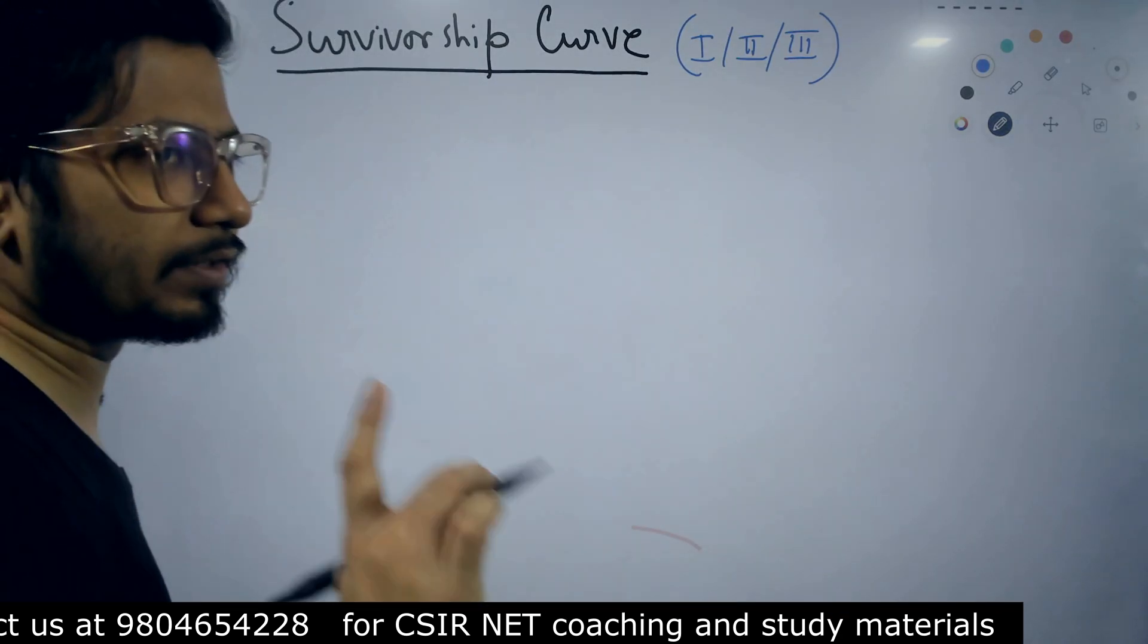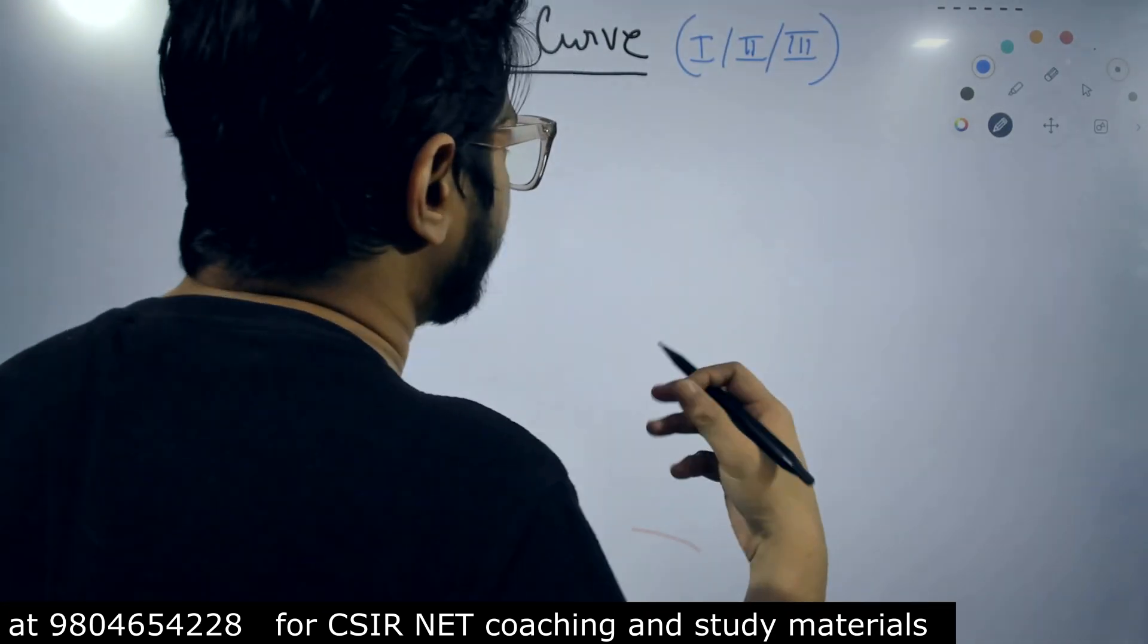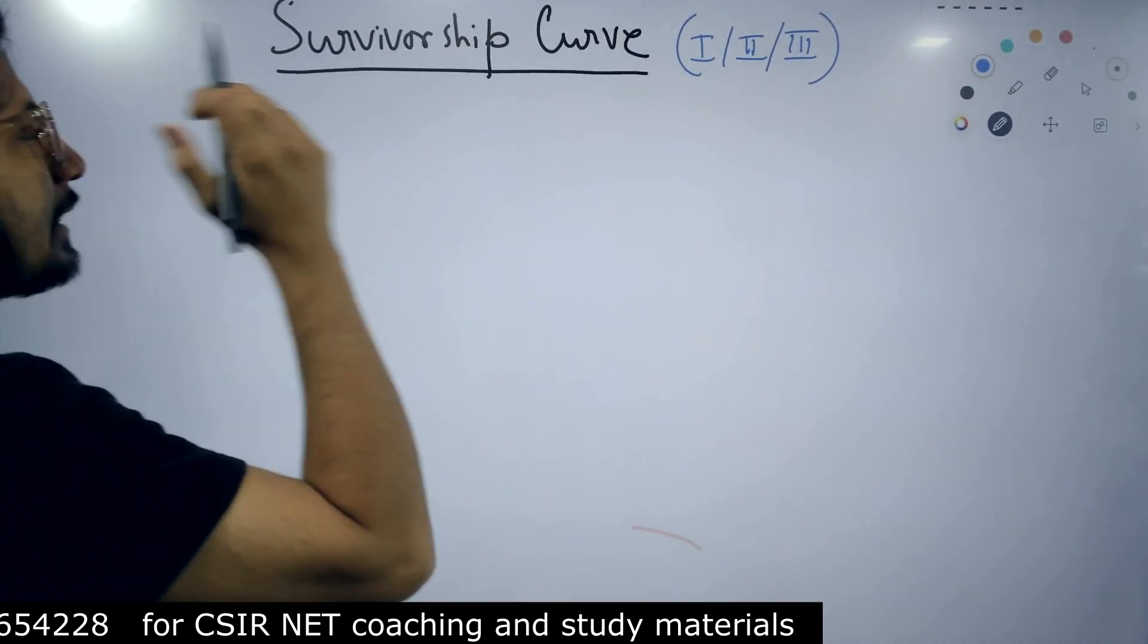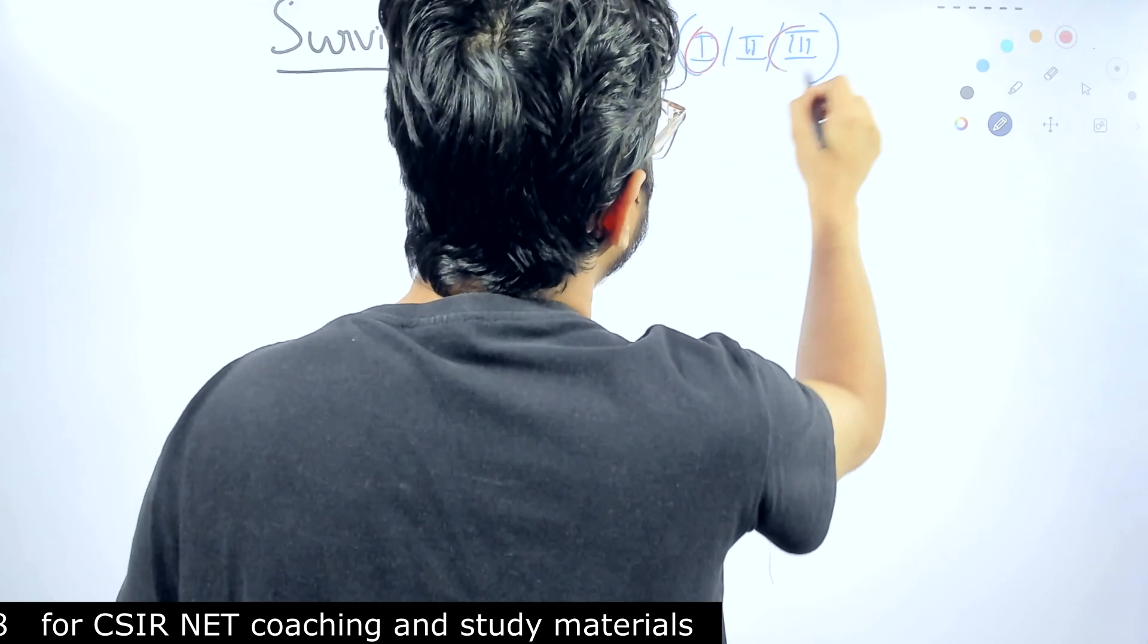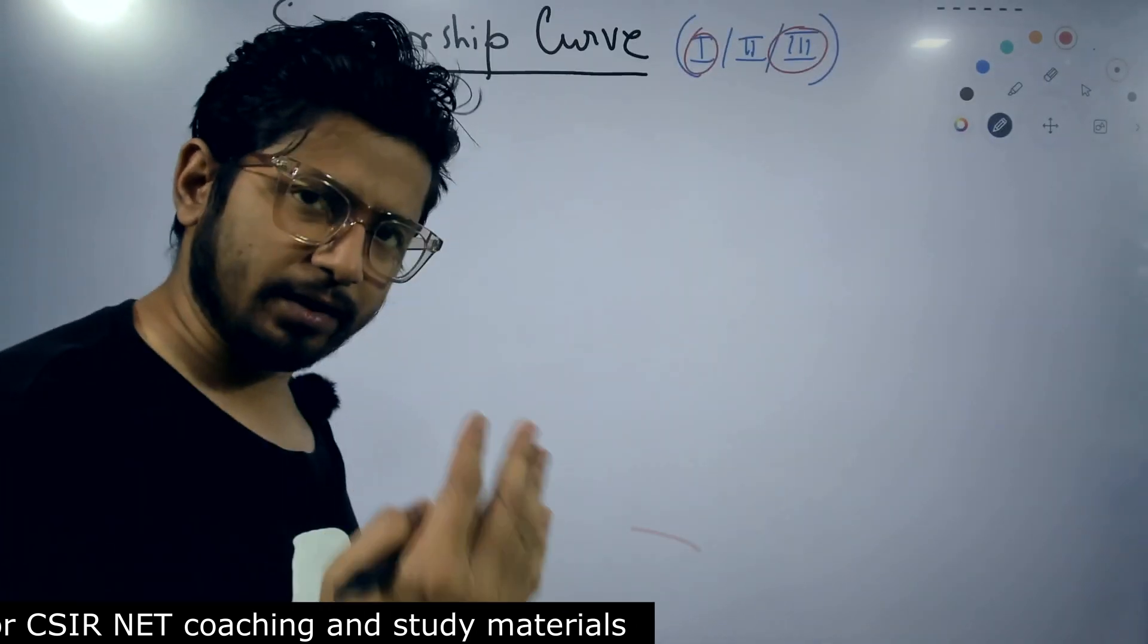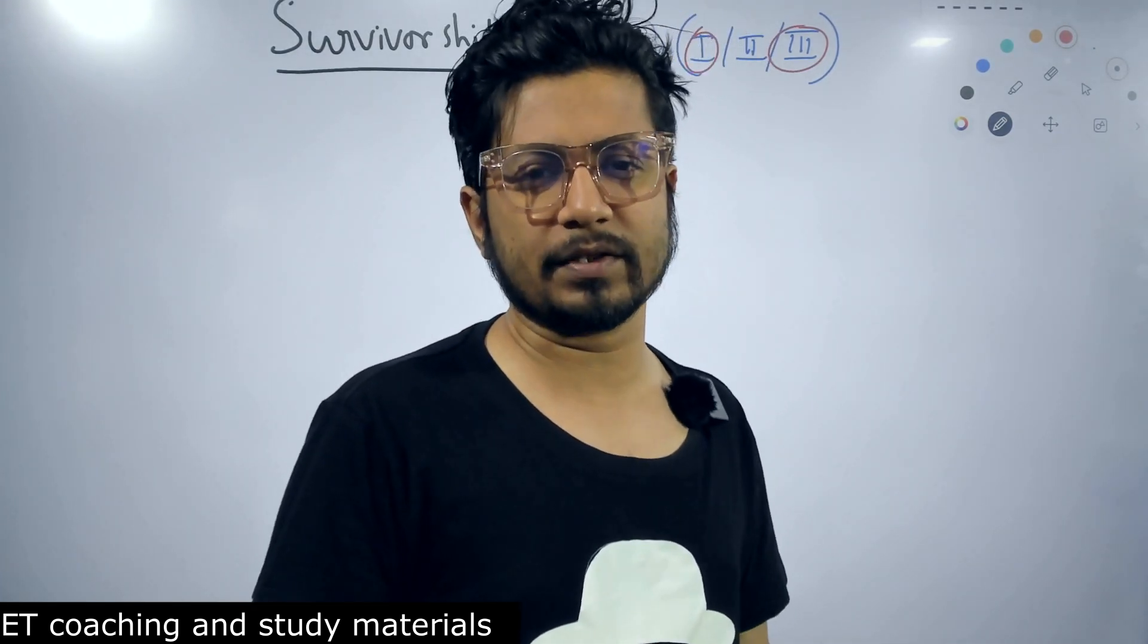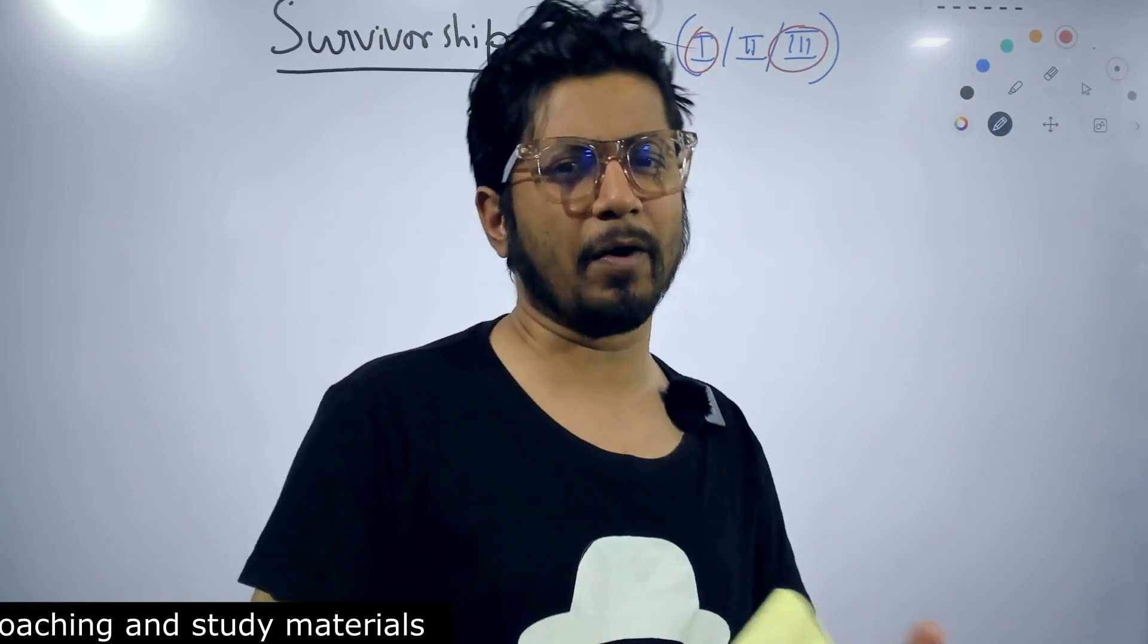Now these three separate survivorship curves—Type 1, Type 2, and Type 3—among these three curves, particularly more important ones are Type 1 and Type 3, because the organisms they follow are kind of opposite to each other.